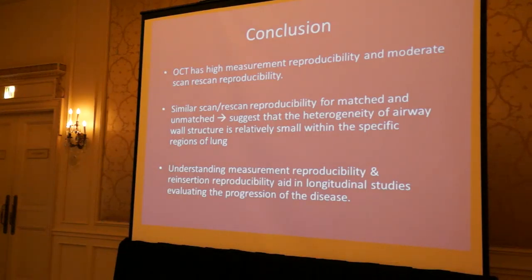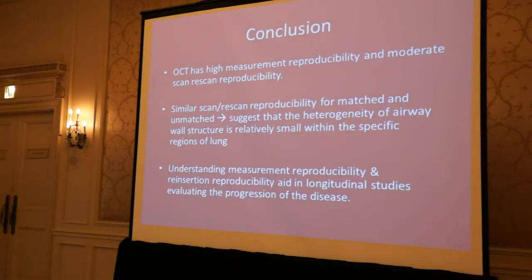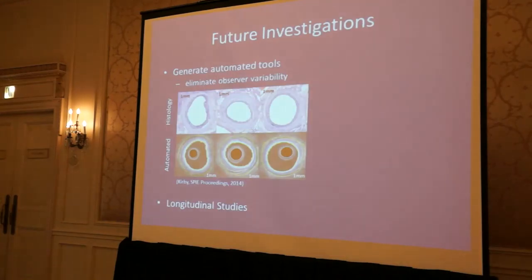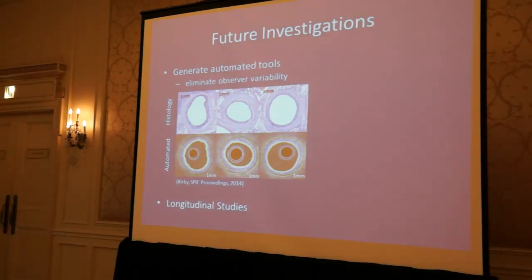In conclusion, OCT has high measurement reproducibility and moderate scan-rescan reproducibility. There is similar scan-rescan reproducibility for matched and unmatched airways, which may suggest that heterogeneity of the airway wall structure is relatively small within specific regions of the lung. Measurement reproducibility and reinsertion reproducibility may aid longitudinal studies evaluating disease progression. In the future, we would like to develop automated OCT imaging tools to eliminate observer variability, and to begin longitudinal studies.